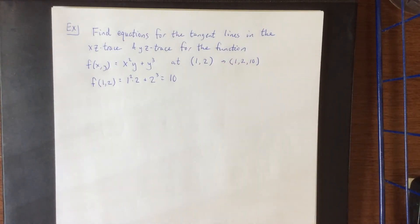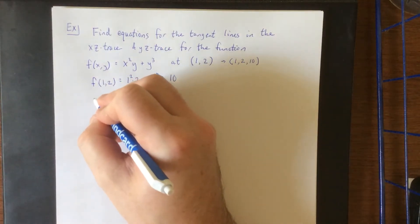When we're finding the equation of a line in three dimensions it's necessary to have a point as well as a direction vector. So let's go ahead and start working on those direction vectors.